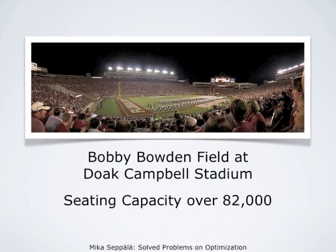This photograph is from the Bobby Bowden Field at the Roque-Campbell Stadium, home of the Florida State University football team, with a seating capacity of over 82,000. This season, 2010, has been pretty successful, and in the aftermarket the ticket prices may be more than doubled. So one can say that a better way to increase revenues is to have a better football team — then prices can be set higher, so instead of lowering the prices, one might want to consider improving the football team.